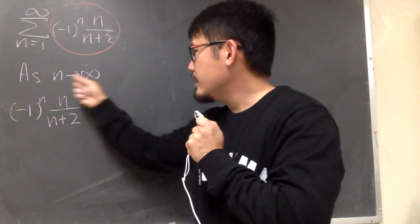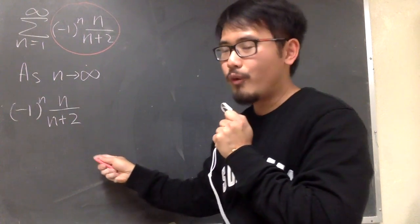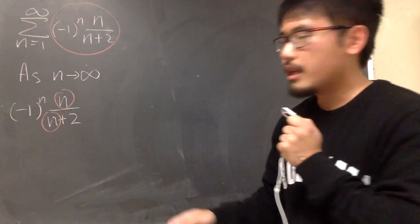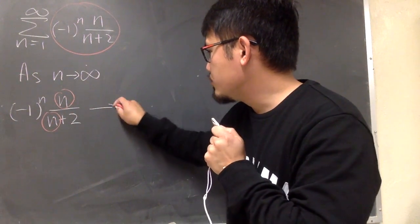Alright, as n goes to infinity, let's focus on this part first, n over n plus 2, which we just care about n on the top here, and then this n on the bottom here.